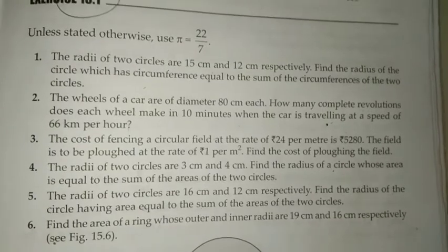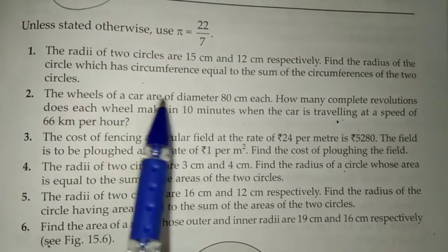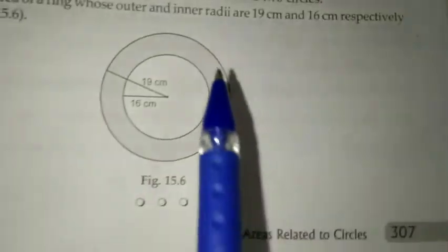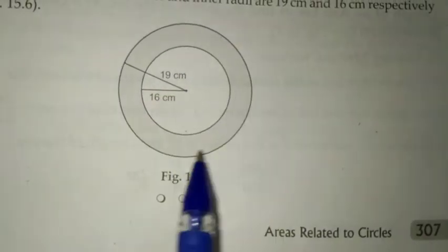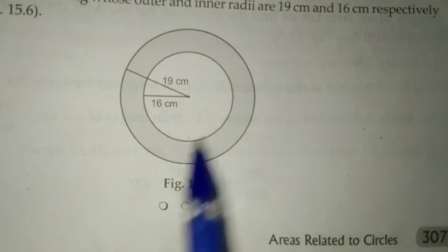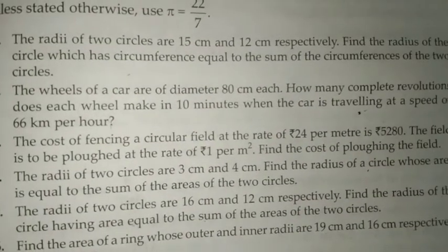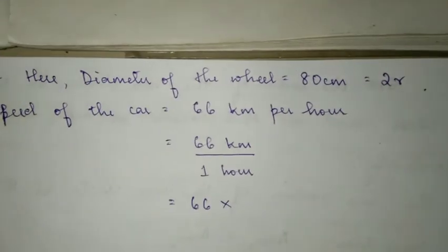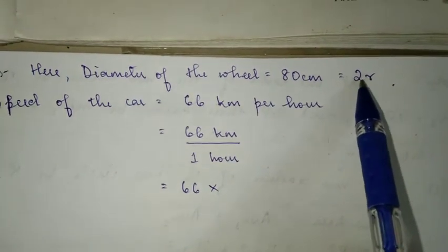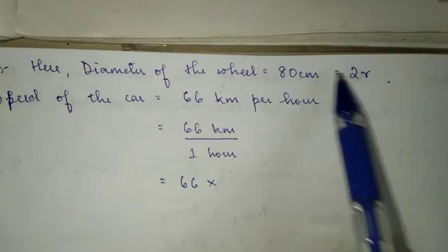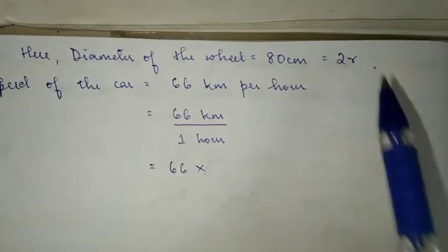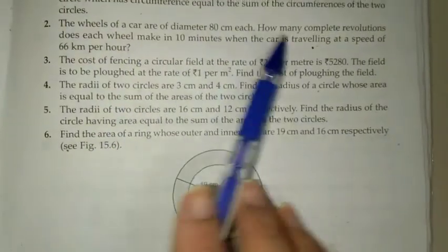In question number two, the wheels of a car are of diameter 80 centimeter each. How many complete revolutions does each wheel make in 10 minutes when the car is traveling at a speed of 66 kilometers per hour? One revolution means the circumference. Diameter of the wheel is 80 centimeter. I am not finding out r over here because in the formula anyway we're going to use it as 2 into r.